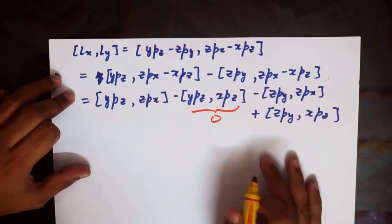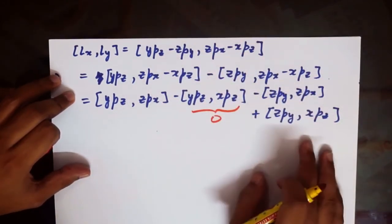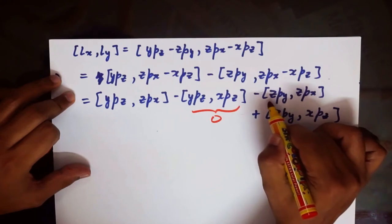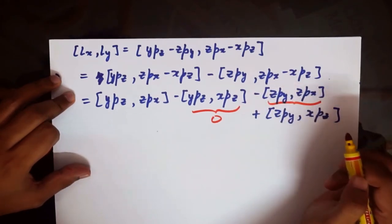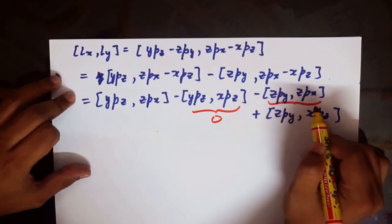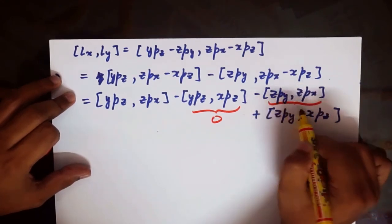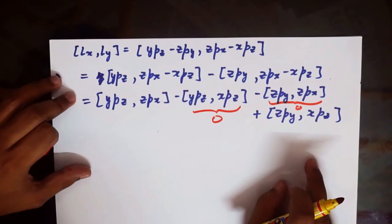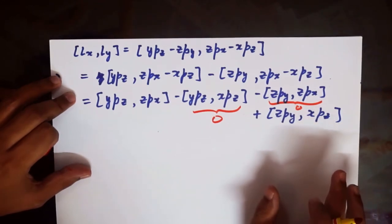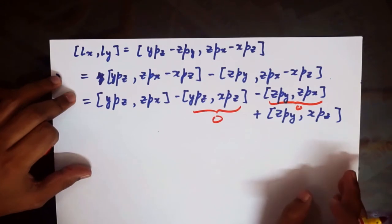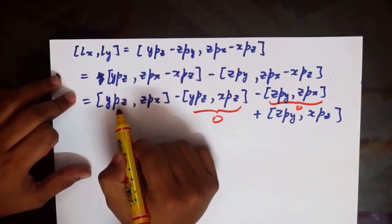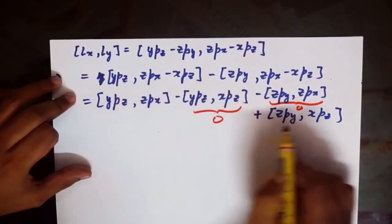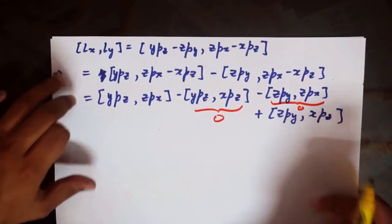Similarly, [zPy, zPx] also vanishes because there is no pair of operators that fail to commute. The remaining non-zero terms are [yPz, zPx] and [zPy, xPz]. These are non-zero because each contains the pair z and Pz, which do not commute with each other and will give a non-zero value.